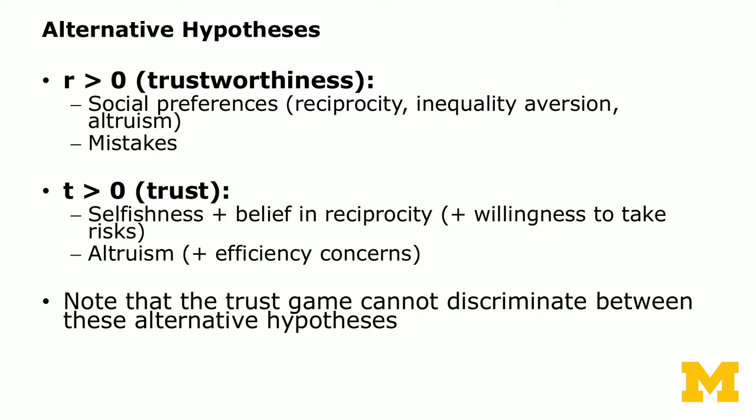There are several alternative hypotheses — given the null hypothesis from game theory with backward induction and self-interested players. The first alternative is R greater than zero, meaning players are trustworthy: when they receive something they want to reciprocate, or they may be inequality averse, or it could be mistakes. The second is that the transfer should be positive, suggesting altruism, efficiency concerns (every point transferred is tripled), or beliefs about the other player.